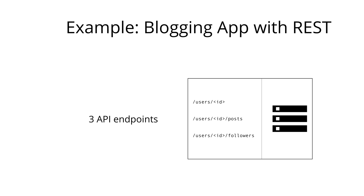How would we tackle this particular screen with a REST API? In REST, we would typically have three different endpoints that would allow us to fetch the required data. The first endpoint is the /users/ID endpoint, where we can obtain information about one particular user identified by the ID passed in the URL.